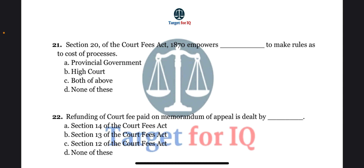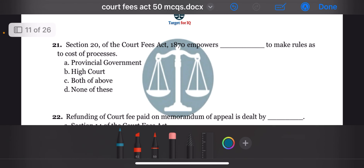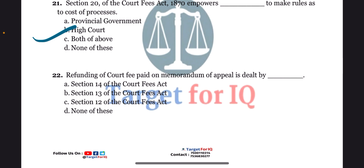Next question: section 20 of the act empowers dash to make rules as to cost of processes. The options are A. Provincial government, B. High court, C. Both of the above, or D. None of these. The correct answer is option B. High court.